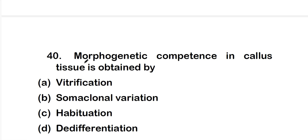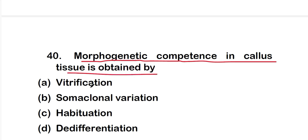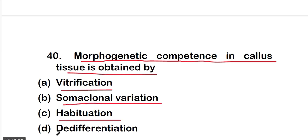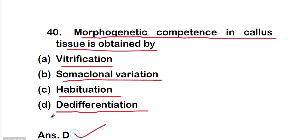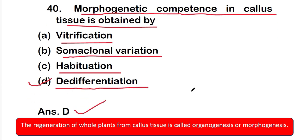Question 40: morphogenetic competence in callous tissue is obtained by option A: vitrification; option B: somaclonal variation; option C: habituation; or option D: dedifferentiation. The right answer is option D — dedifferentiation. Morphogenesis, or the generation of a whole plant from callous tissue, is called organogenesis or morphogenesis, and morphogenetic competence in callous tissue is obtained by dedifferentiation. These are all 20 questions of part 2 on developmental biology.